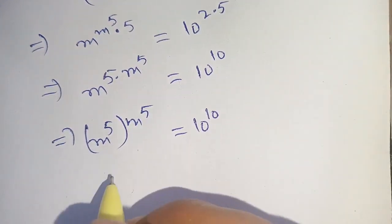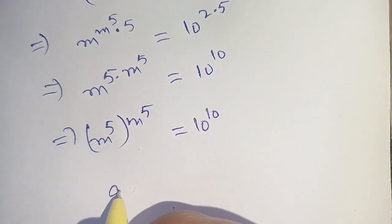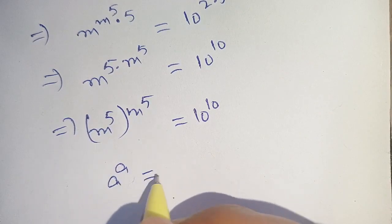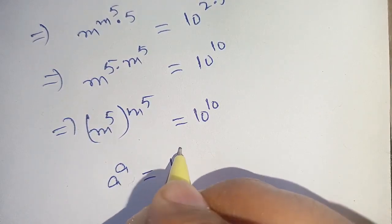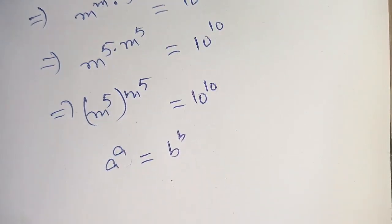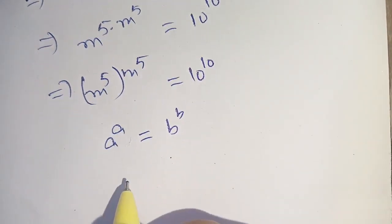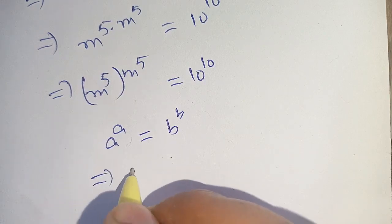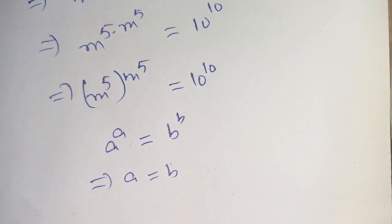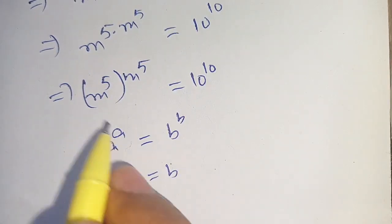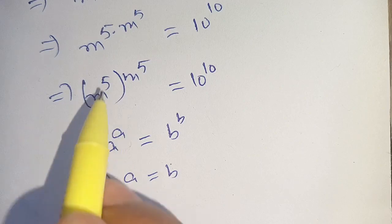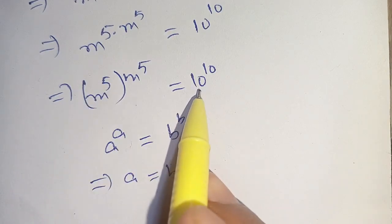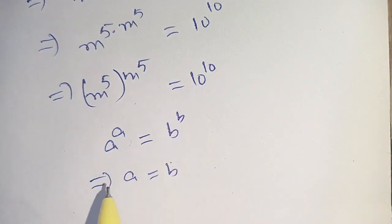Now it is in the form of a raised to the power a is equal to b raised to the power b. If this identity exists, it implies a is equal to b. Here we suppose a is equal to m raised to the power 5 and b is equal to 10.